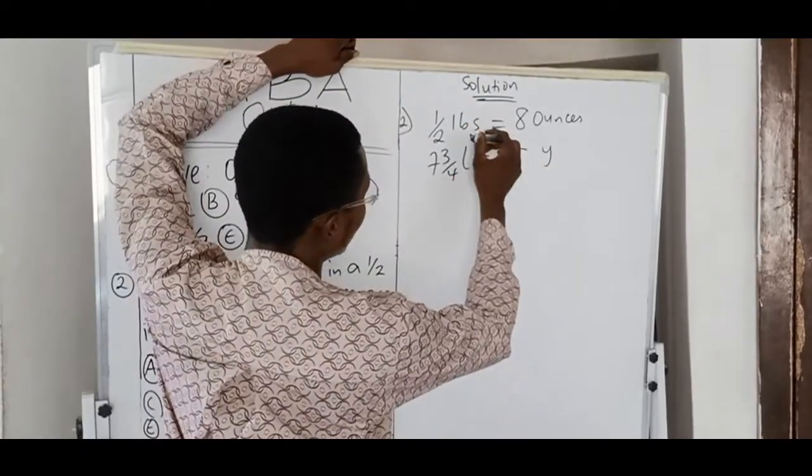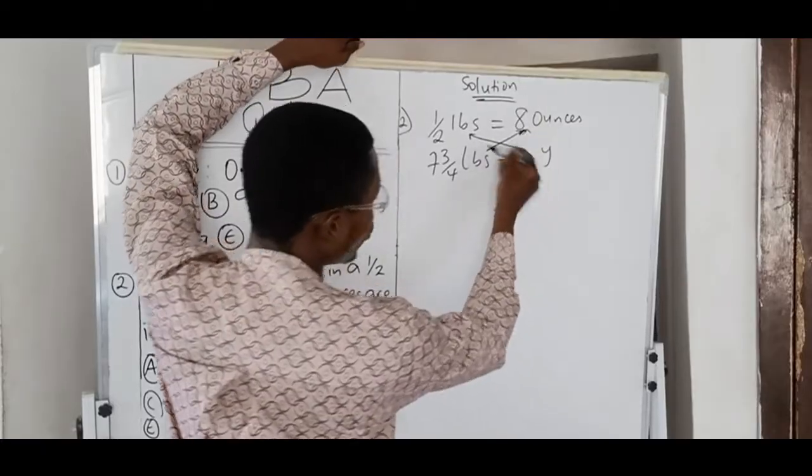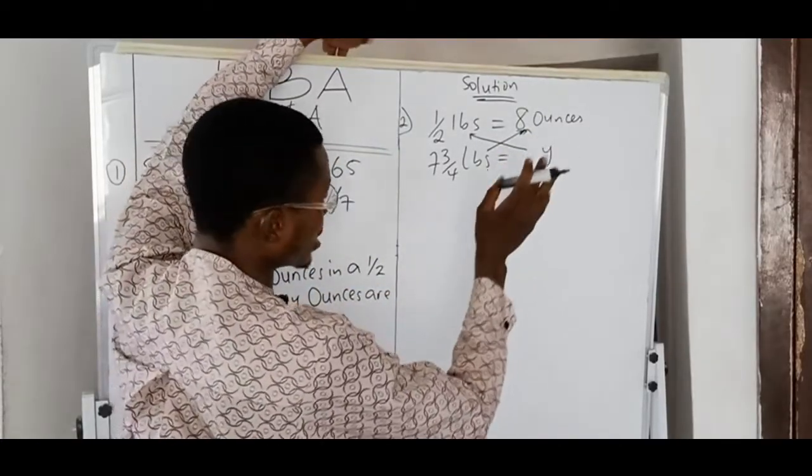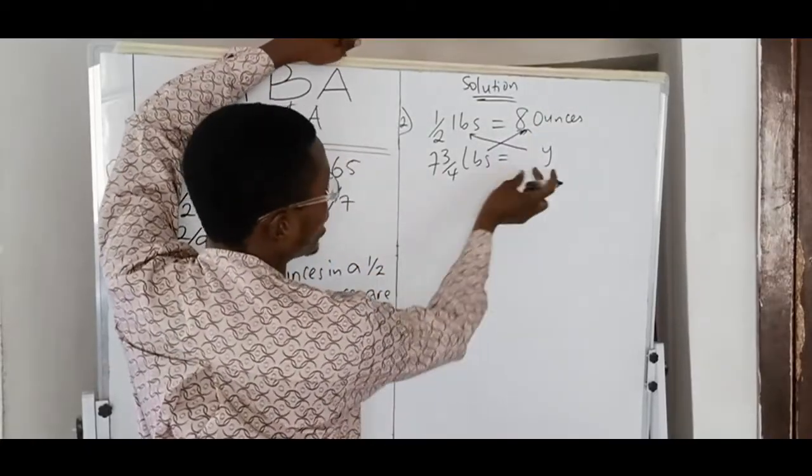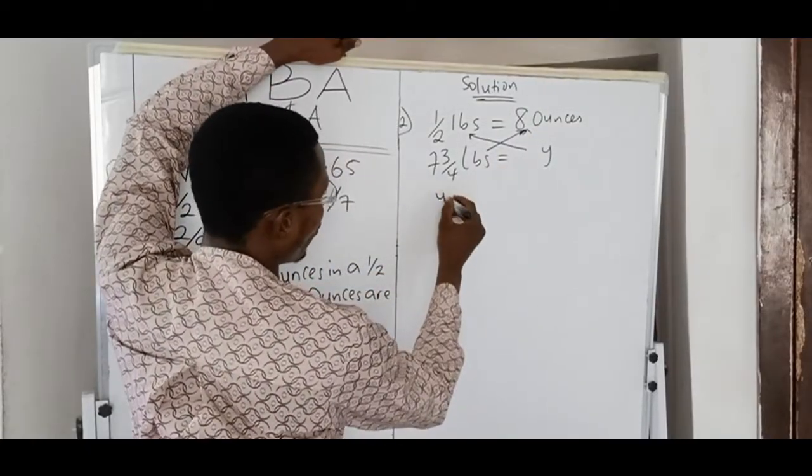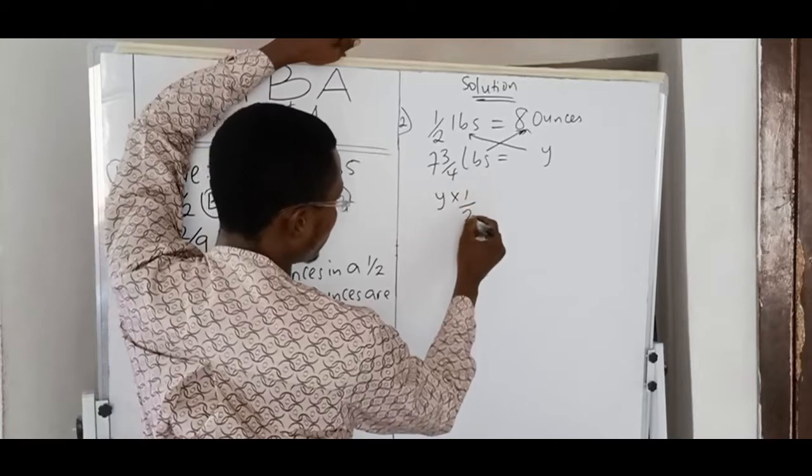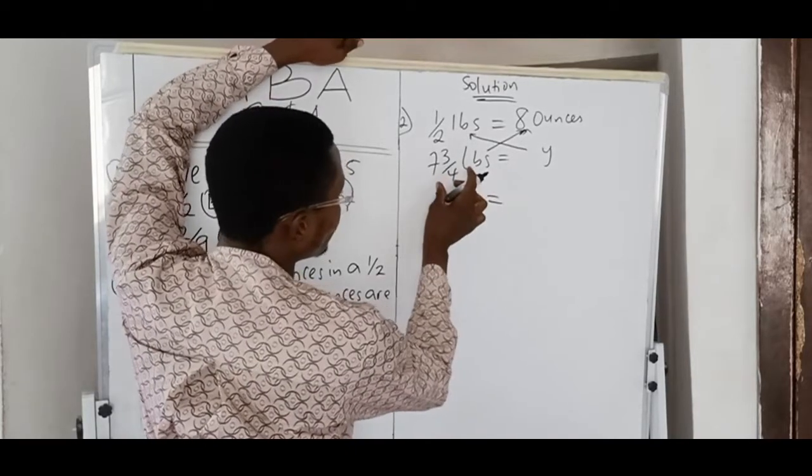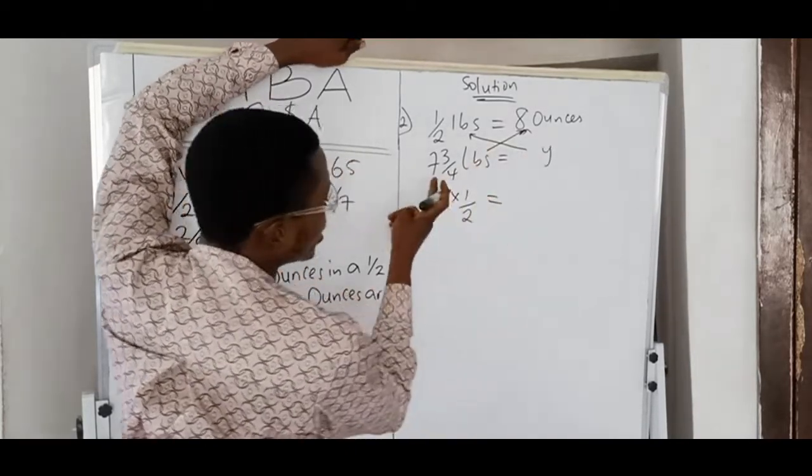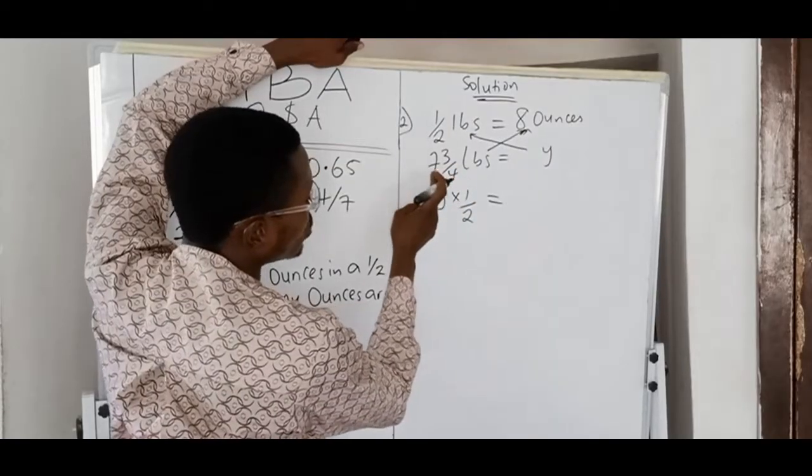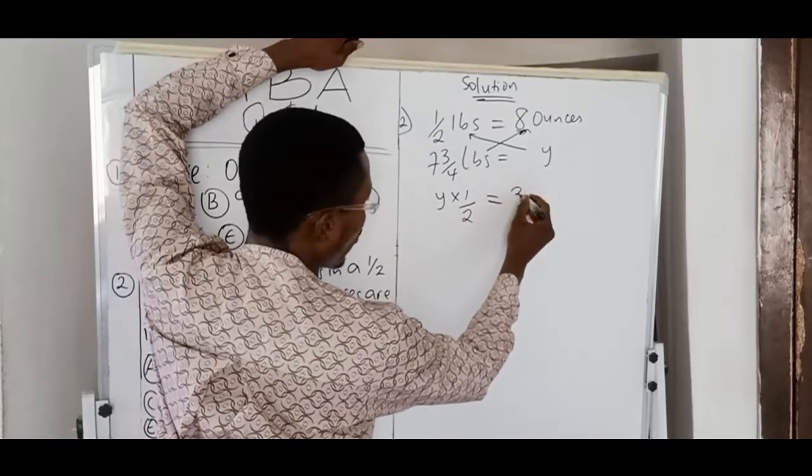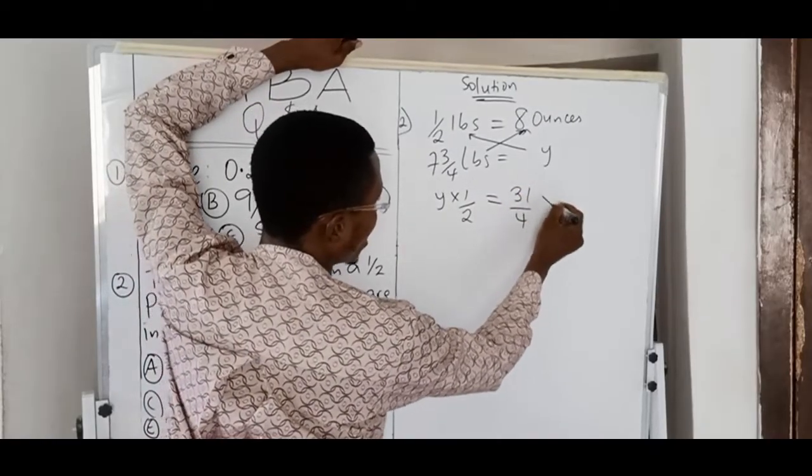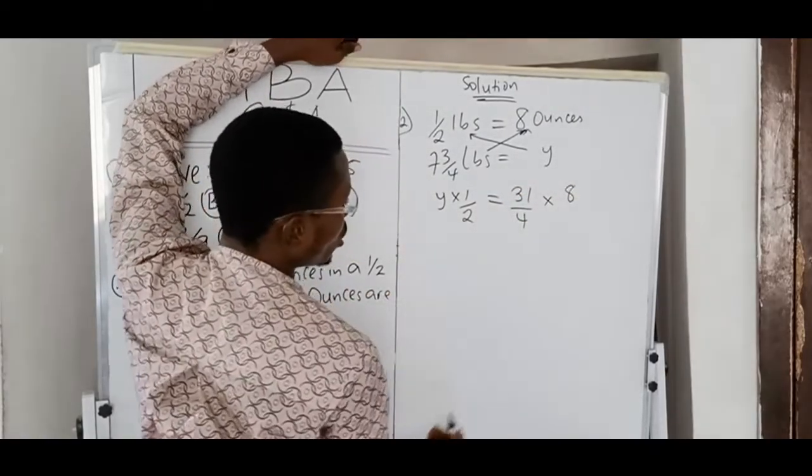Now, I'm going to be working with just the numbers. Let me leave the units aside. Also, I get as Y is under ounces. So, I cross-multiply. Y times half. I have Y times half equals 7¾ times eight. Let me change it to mixed fraction. Seven times four. Four times seven is 28. Eight plus three. I have 31 over 4 times 8.